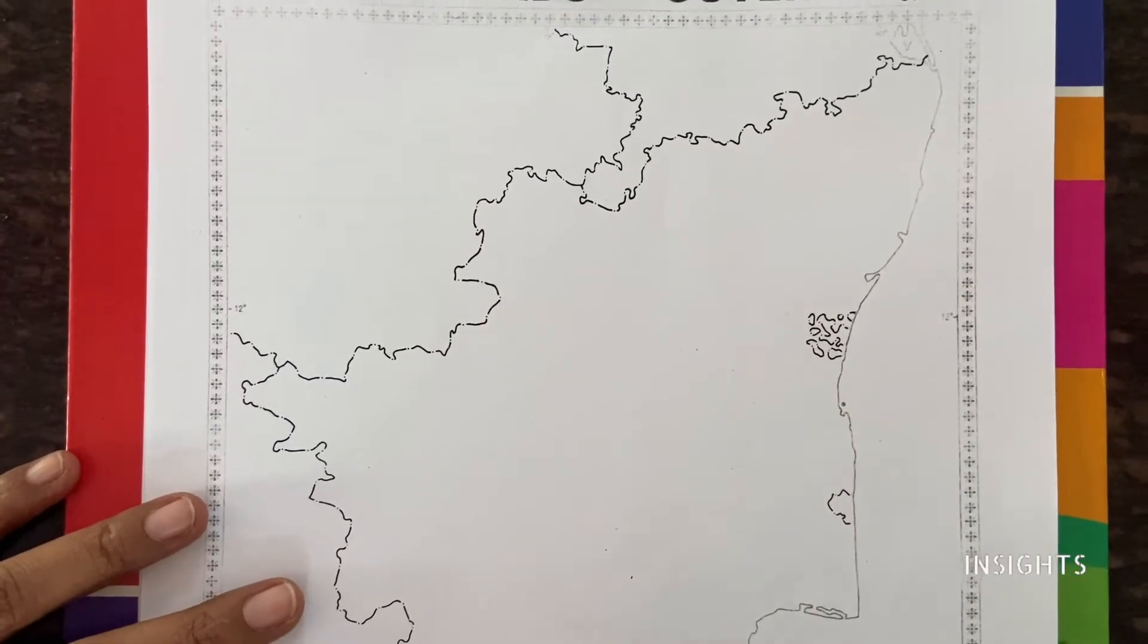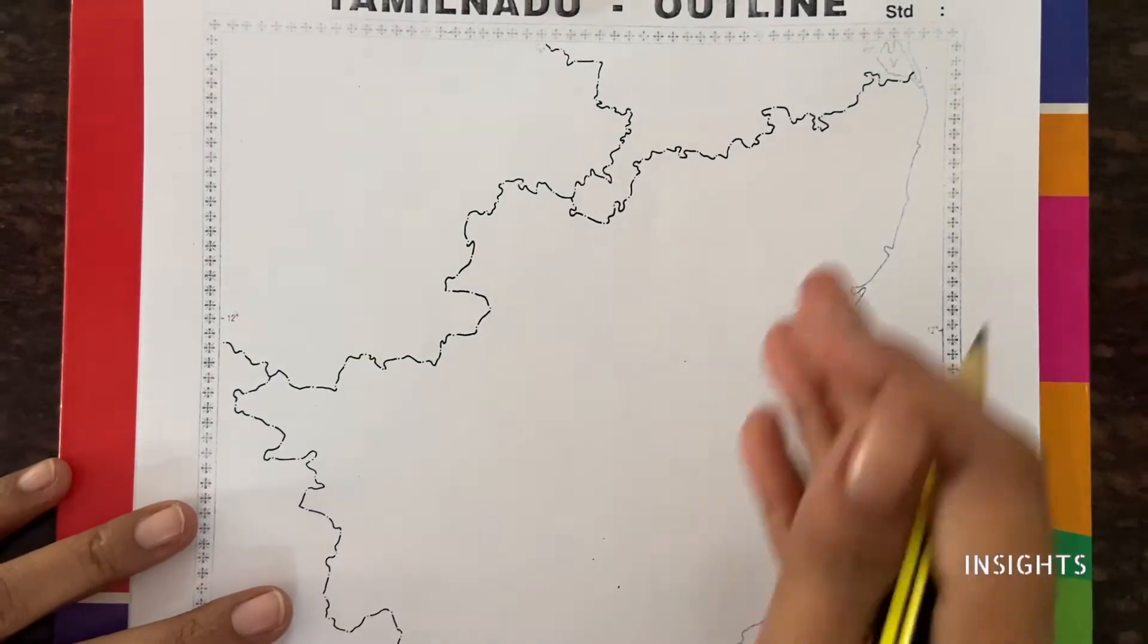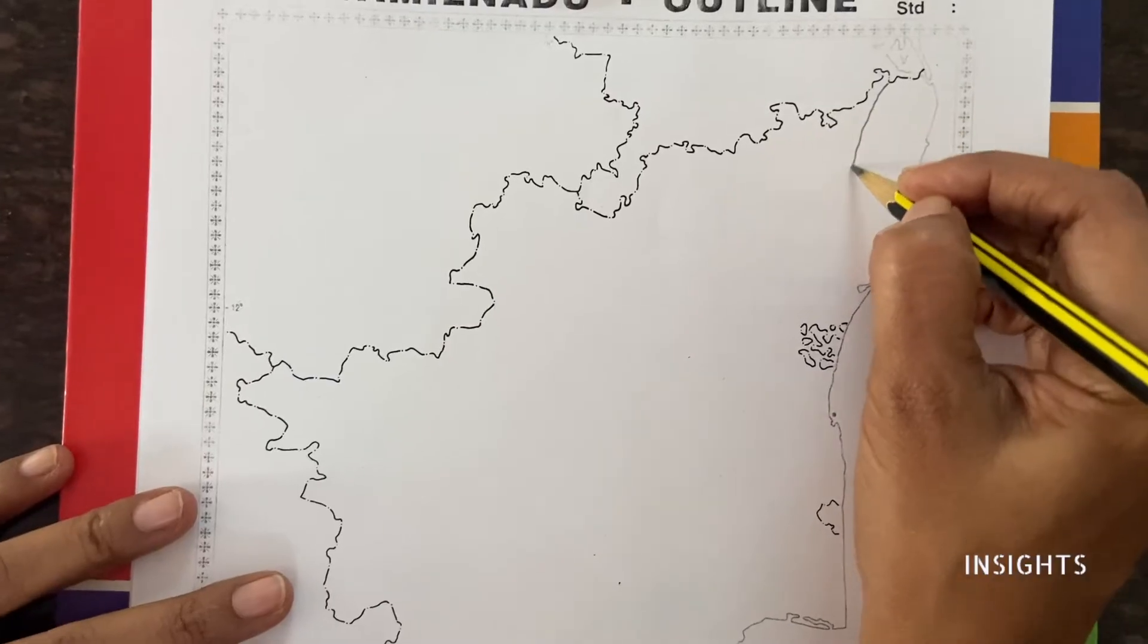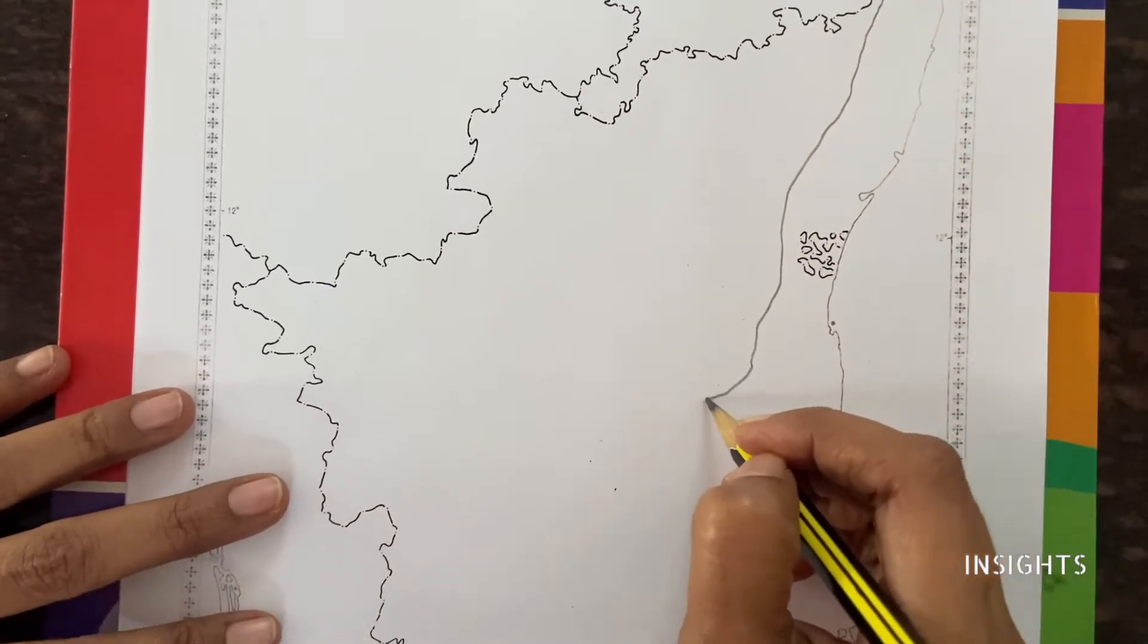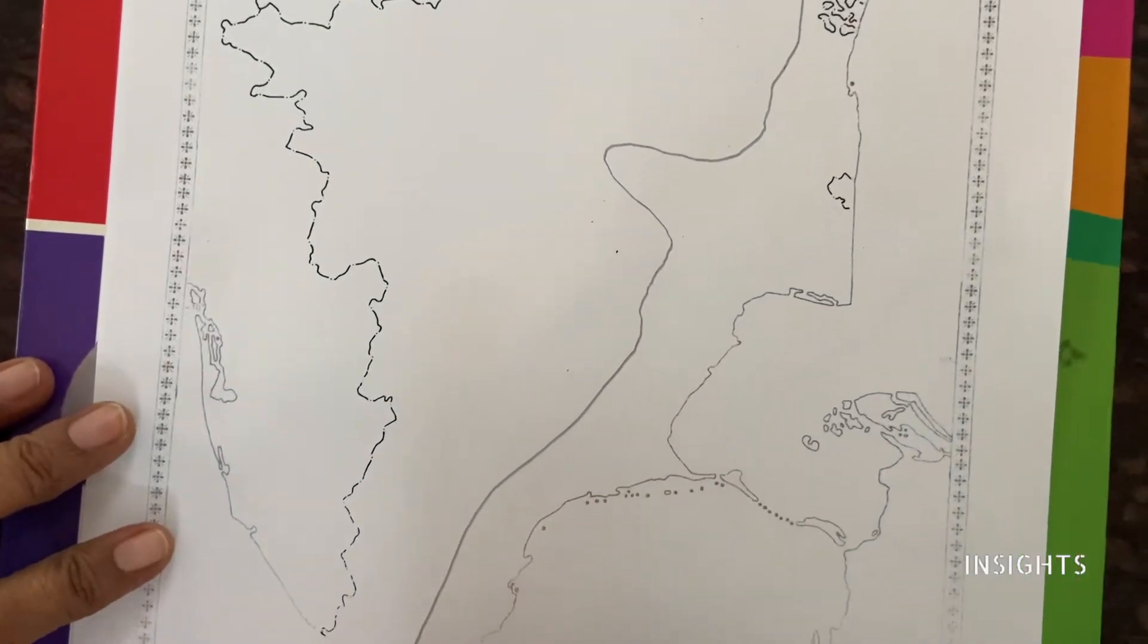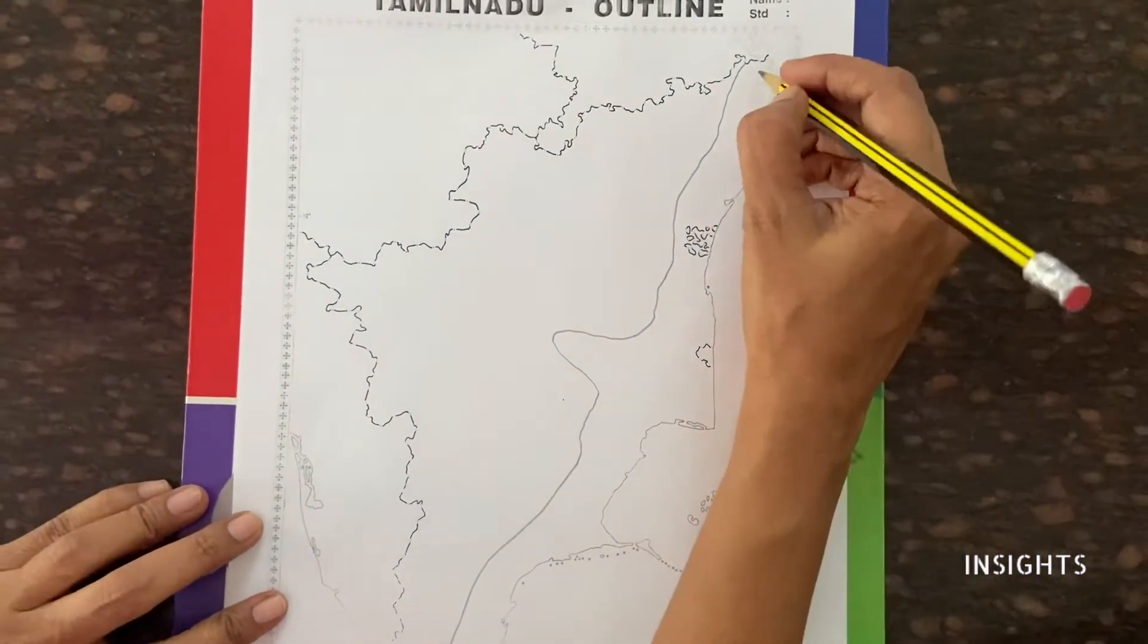It has got a very long coast and many rivers are flowing. Naturally in the soil, it is going to be alluvial soil. All along the coast, we have alluvial soil. This entire stretch of Tamil Nadu is going to be alluvial soil.